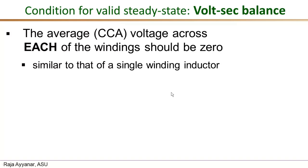We come to the second requirement: volt-second balance for every winding of the transformer. The rule says that the cycle-by-cycle average value of the voltage across each winding should be zero. This is very similar to the volt-second balance for an inductor. Because of the equal volts-per-turn relationship, if any one winding satisfies volt-second balance, all other windings automatically will as well.